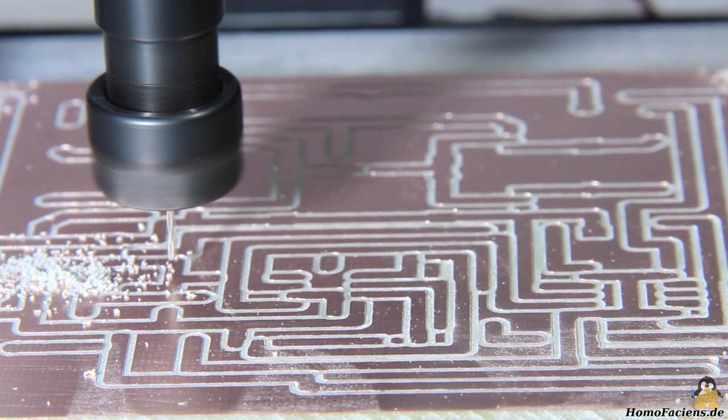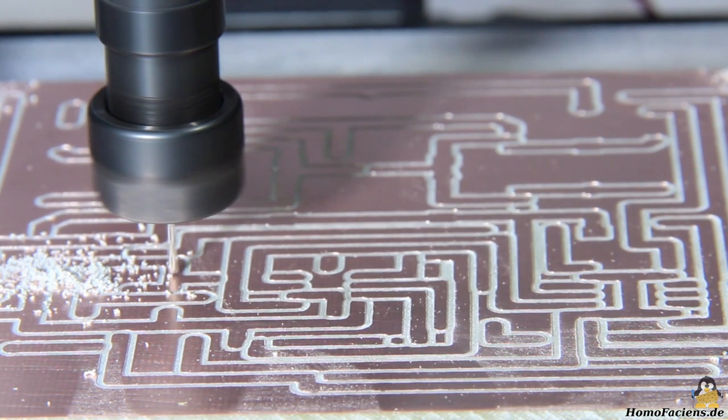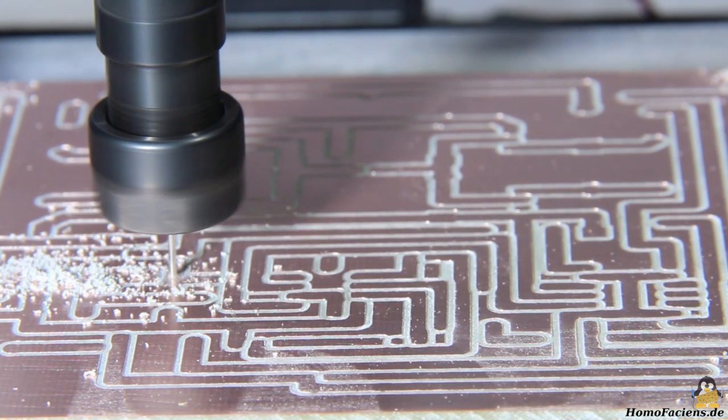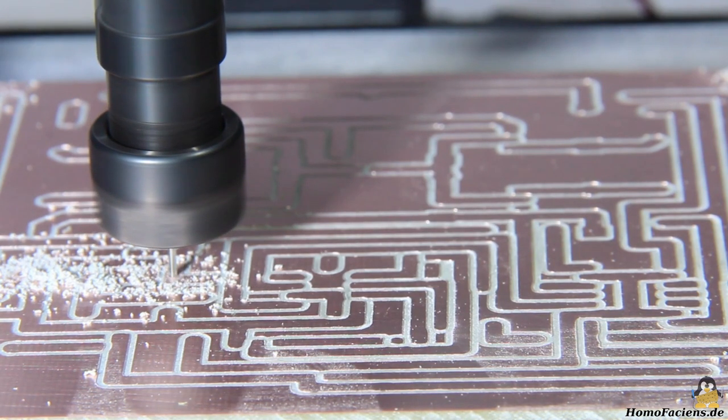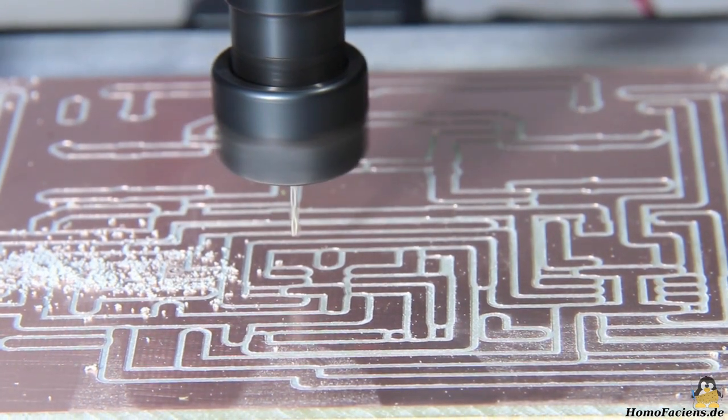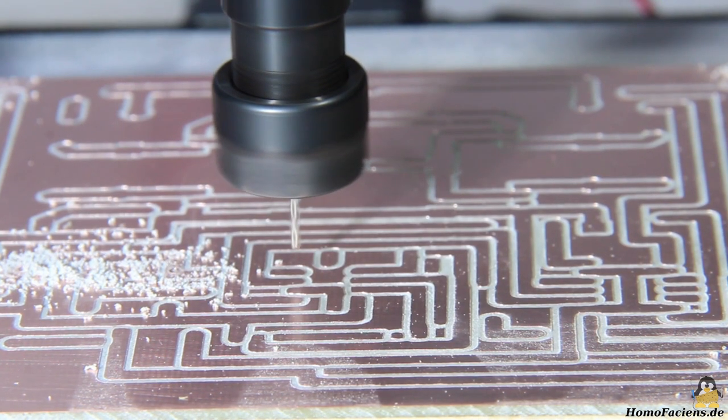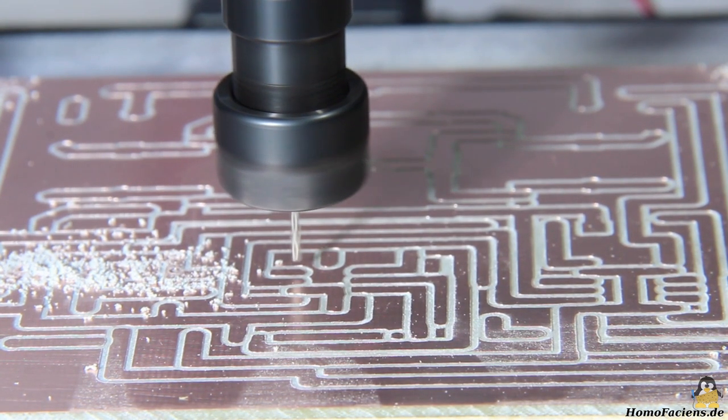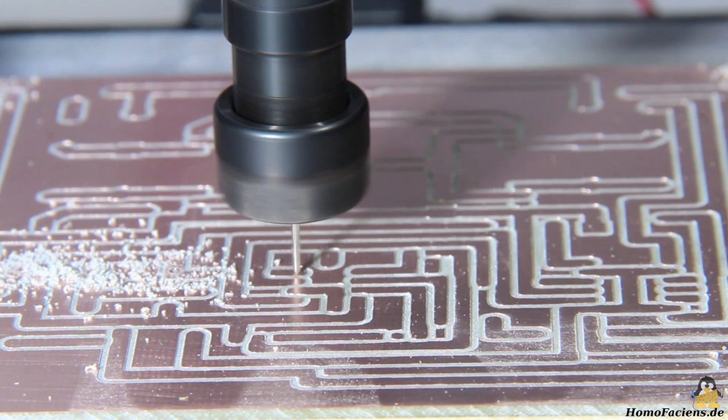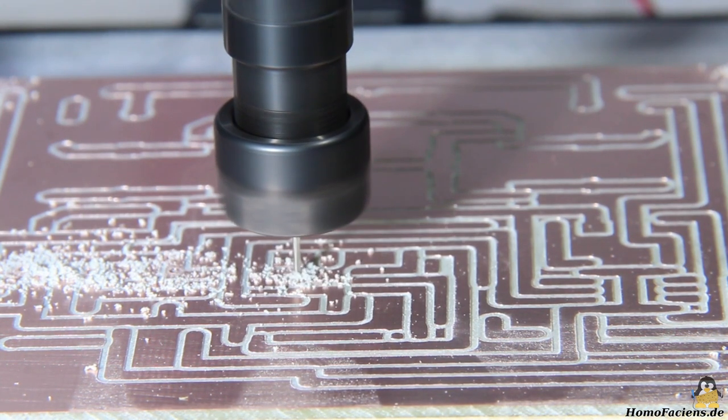The close up shows that the drill dances a little on the surface before it dives into the material of the circuit board. As already mentioned, the runout of the spindle is not perfect and the long, thin drill bends easily, which leads to the observed inaccuracy.